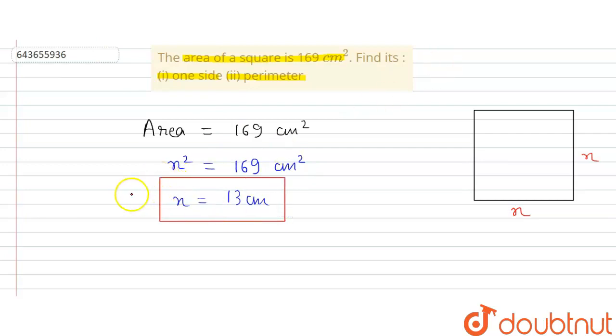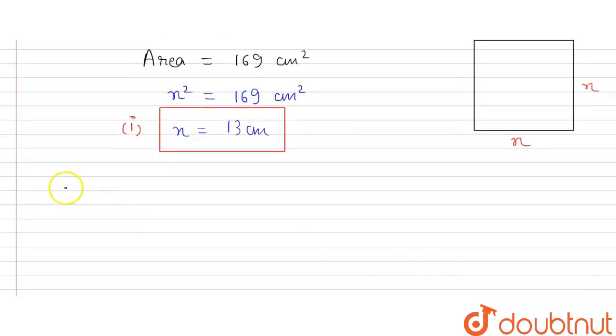This is the first part of the problem. And in the second part, question asks the perimeter of the square.